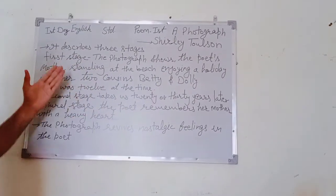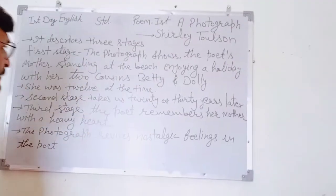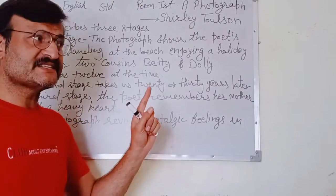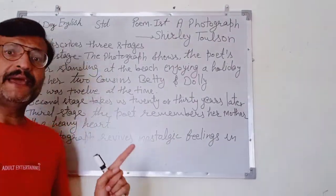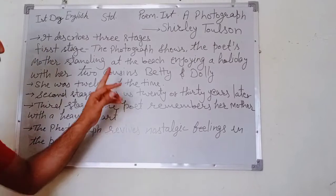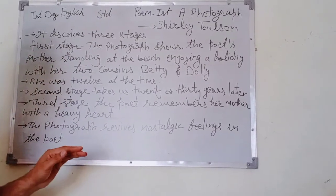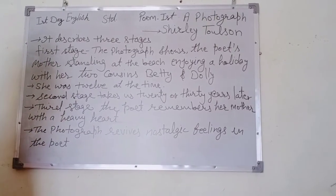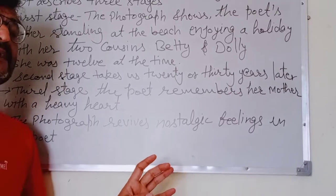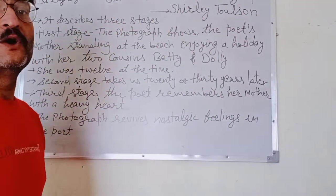I am going to tell you about the main points of this poem, which I have written on this board. First of all, this poem describes three stages — always keep in mind about 'A Photograph.' The poem describes three stages, and according to those, the first stage is: the photograph shows the poet's mother standing at the beach, enjoying a holiday with her two cousins named Betty and Dolly. She was twelve at the time.